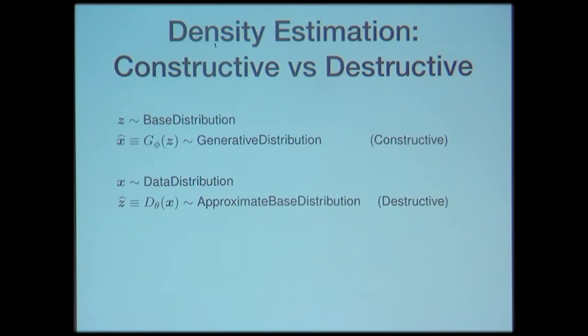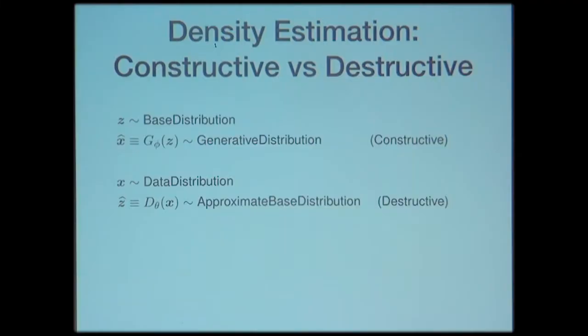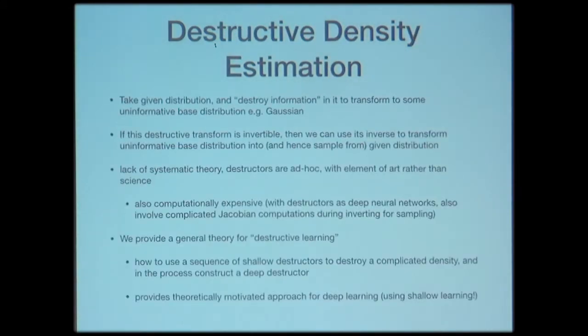What I'm encouraging us to think about is to consider this in one direction specifically: you take the data distribution and try to convert it to a Gaussian. If you think about it as just learning this transformation, there's no reason to directly fit a complicated destructive transform as a whole.